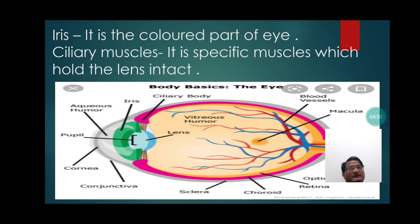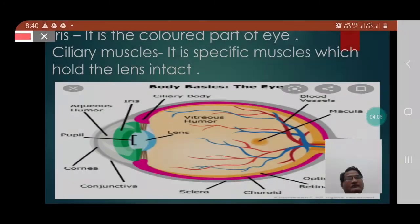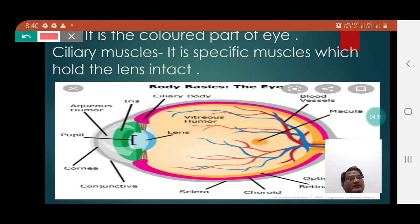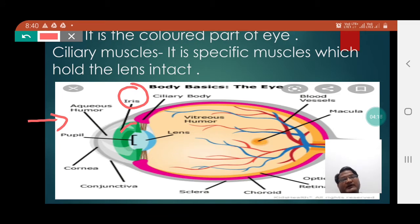Let's see how we define the iris. It is the colored part of the eye. We can understand the concept of iris if we consider this diagram. Here you can notice the part of the eye which provides a distinct color to the eye — that is called the iris.